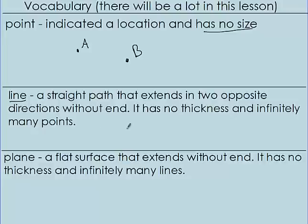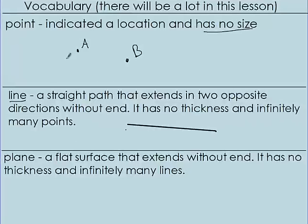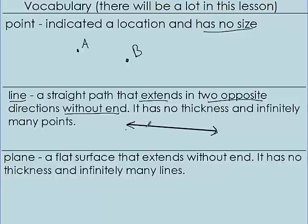A line — you'd think we just draw a straight line, any direction. But when we talk about a real line, it extends in two opposite directions without end. This line doesn't stop from here to here and that's it — this line will keep going to the left and to the right forever, so we indicate that with these little arrowheads. A line has to have arrowheads that indicate it keeps going on forever in both directions.